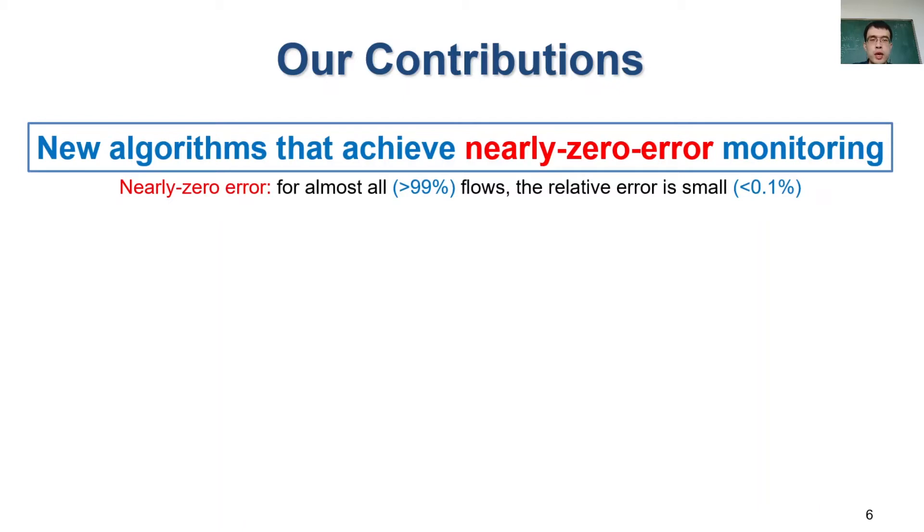By nearly zero error, we mean that for almost all flows, the relative error of their monitored values is below a small bar. We follow the line of sketch algorithms, and our key idea is to introduce compressive sensing in the sketch design. Compressive sensing is a signal processing technique that already achieves nearly zero error in many areas such as image processing. So we hope to follow its idea in network monitoring.